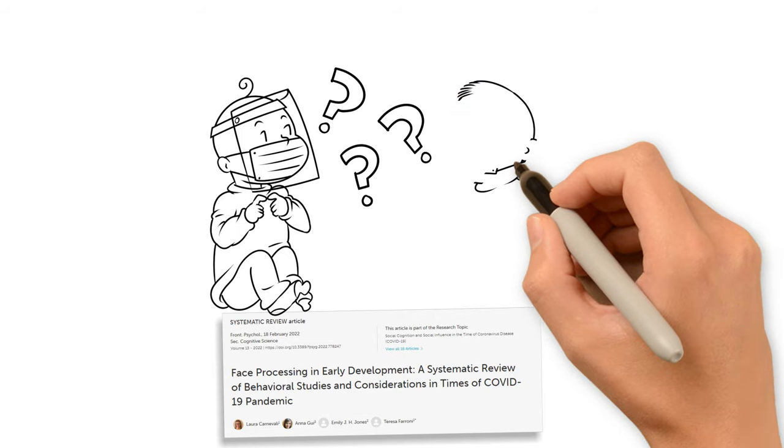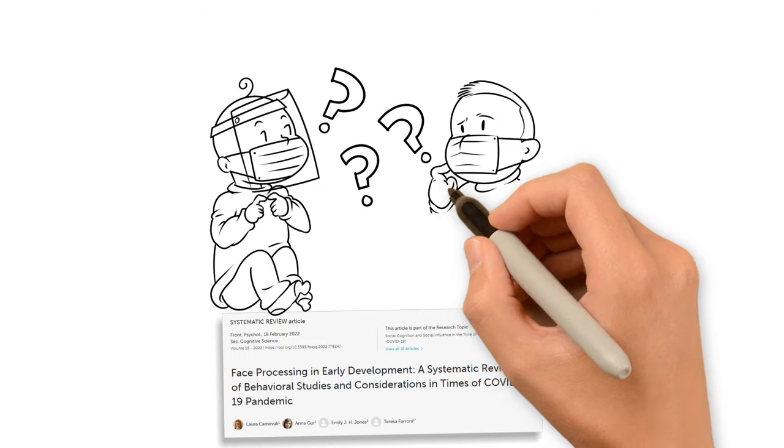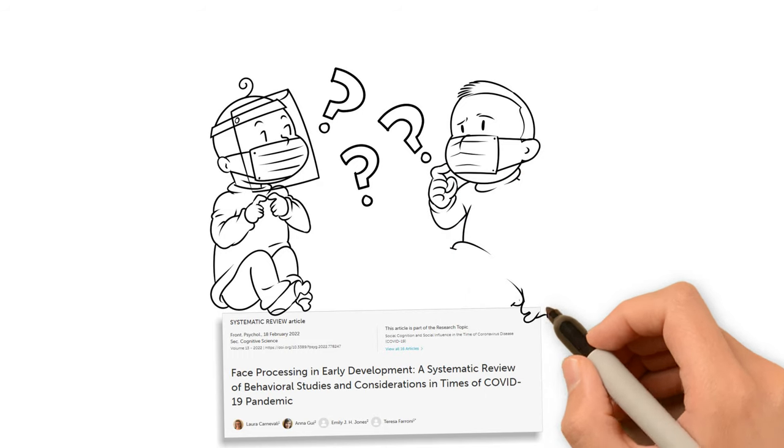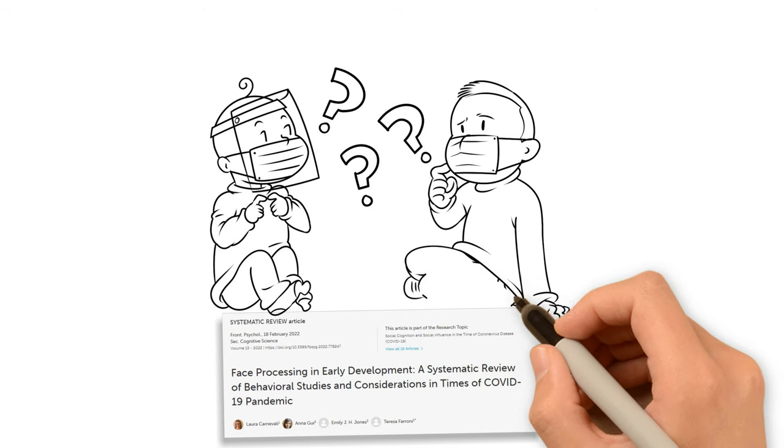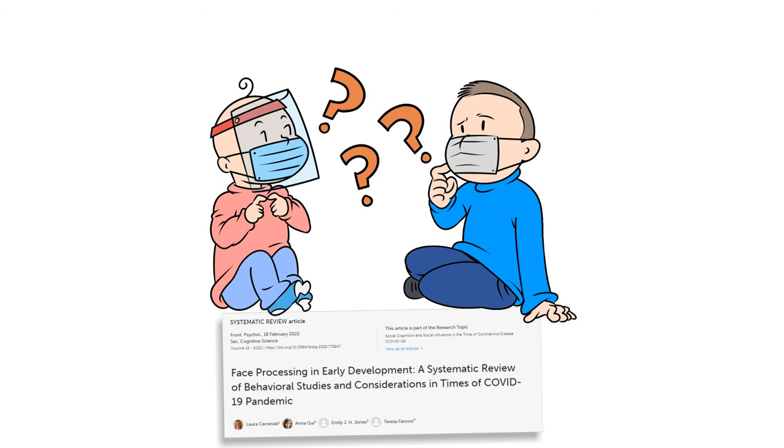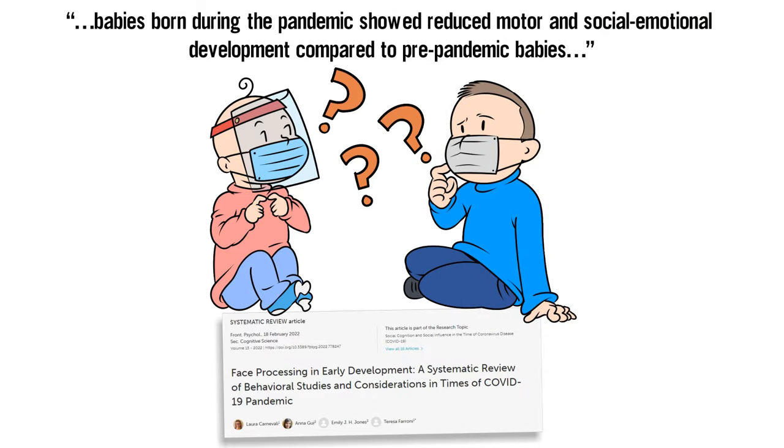Other studies have documented the consequences. Columbia University researchers found that babies born during the pandemic showed reduced motor and social-emotional development compared to pre-pandemic babies. And the medical journal Contemporary Pediatrics reported that pediatric speech disorders more than doubled.